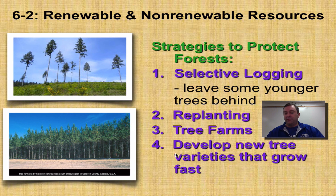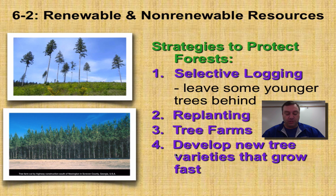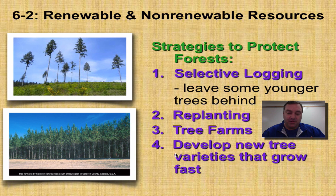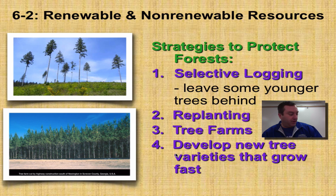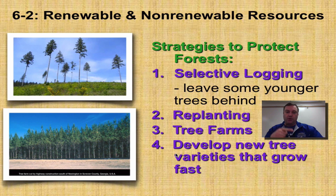We could also develop new tree varieties that grow really fast. The problem with trees is they take decades to reach harvestable height. Through artificial selection or genetic alteration, we could create trees that grow much faster than normal — so instead of taking 20 years to reach harvestable height, maybe it only takes 10 years. That would be a great impact for tree farming and would keep us from over-impacting natural forests. We'll stop here and catch you on the flip side.